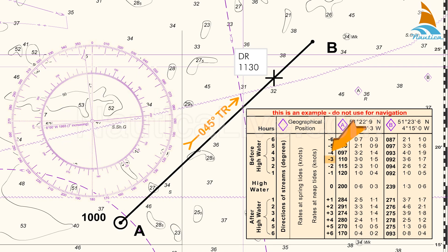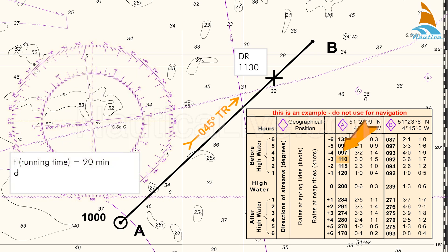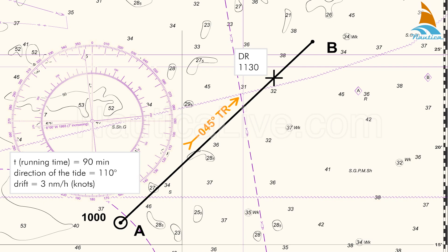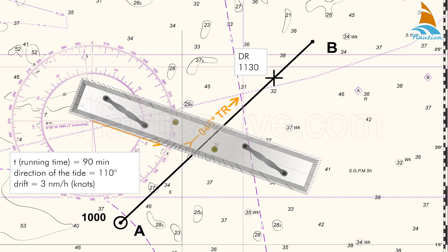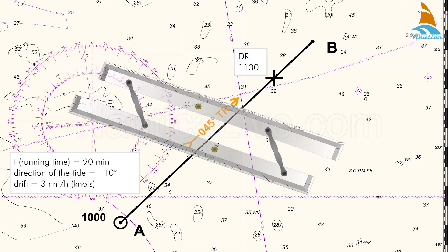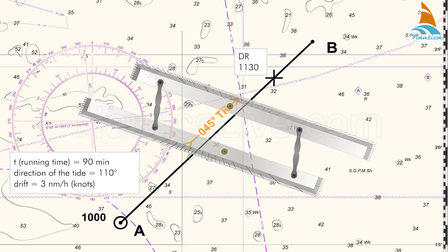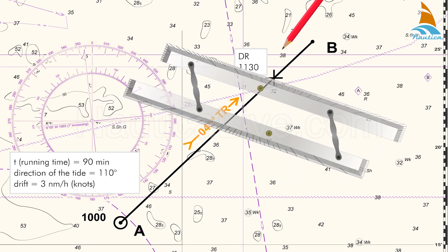Let's assume that at that time the set is 110 degrees, which means that the direction of the tide is towards 110 degrees and the drift is 3 knots. To apply the set — the direction of the tide — on the 11:30 DR position, we place the parallel ruler on the 110-degree line of the compass rose and transfer that line to the DR position.